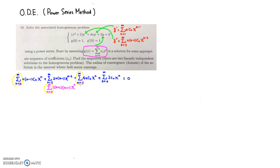Now we can write one summation from n equals 0 to infinity, and everyone has x to the n — x to the n here, x to the n there, x to the n there. So we can pull out x to the n, and the right-hand side is 0.